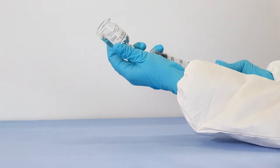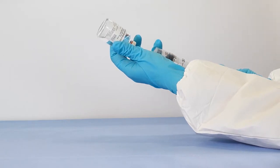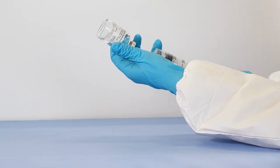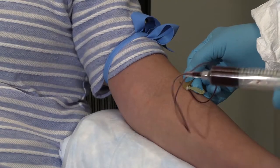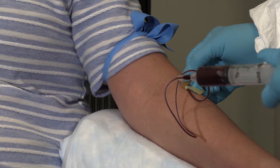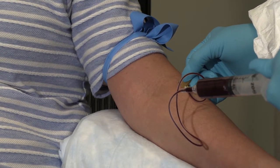Fill a 60-milliliter sterile syringe with 6 milliliters of citrate anticoagulant. Then draw 54 milliliters of blood from the patient, filling the syringe to 60 milliliters.